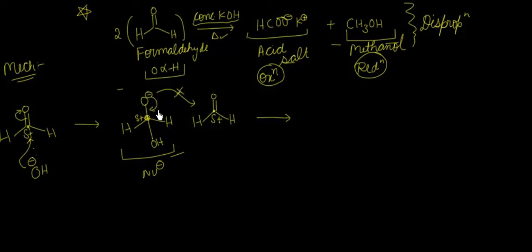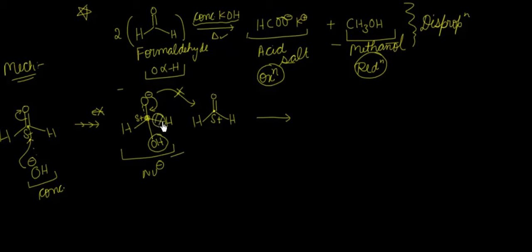तो यह O negative यहां पे back bonding करेगा students। जैसे यह back bonding करेगा, इस C=O के बीच में bond बनना चालू होगा। अब एक possibility यह है कि OH खुद निकल जाए — अगर OH निकल जाएगा तो reaction backward में चली जाएगी और जो हमारा reactant था वही मिल जाएगा। पर backward reaction ना हो, इसलिए हमने OH minus concentrated लिया है — इसकी concentration high ली है — ताकि reaction forward चले। तो H minus की form में, H दोनों electron लेके निकलेगा — यह hydride का migration, उसका transfer हुआ है।